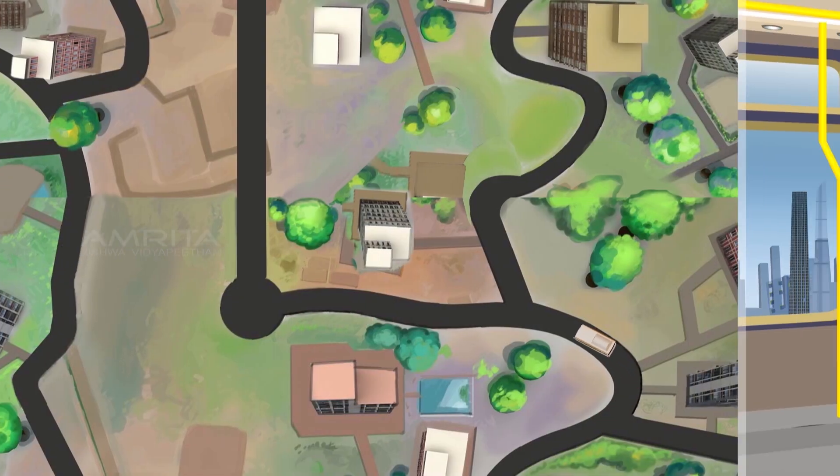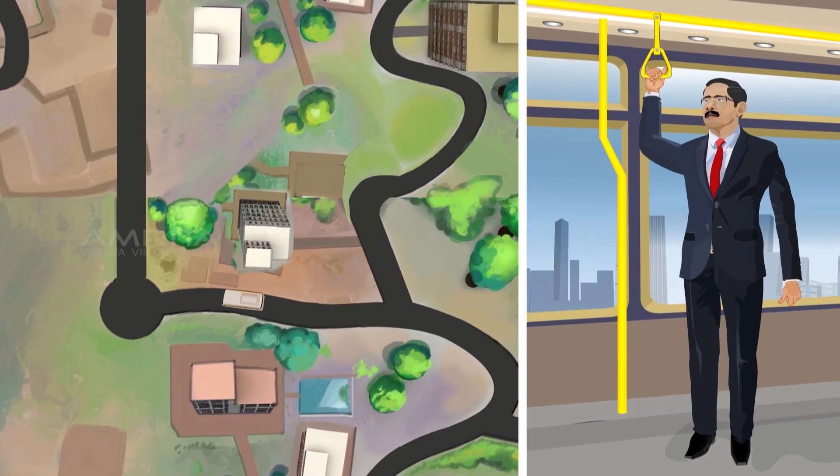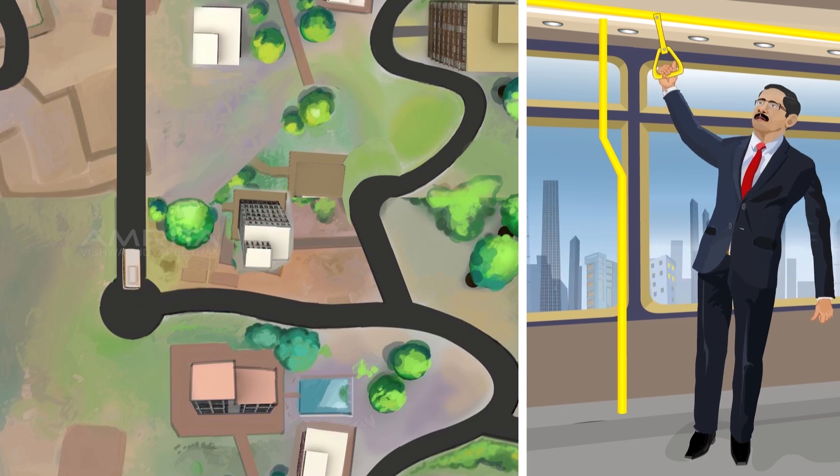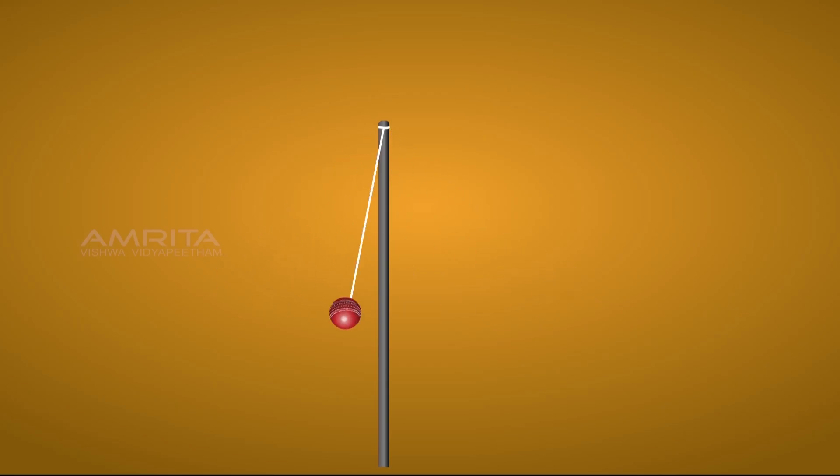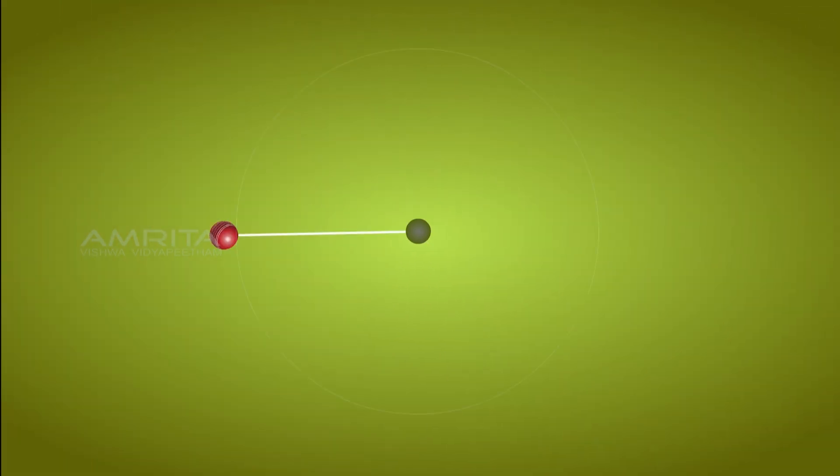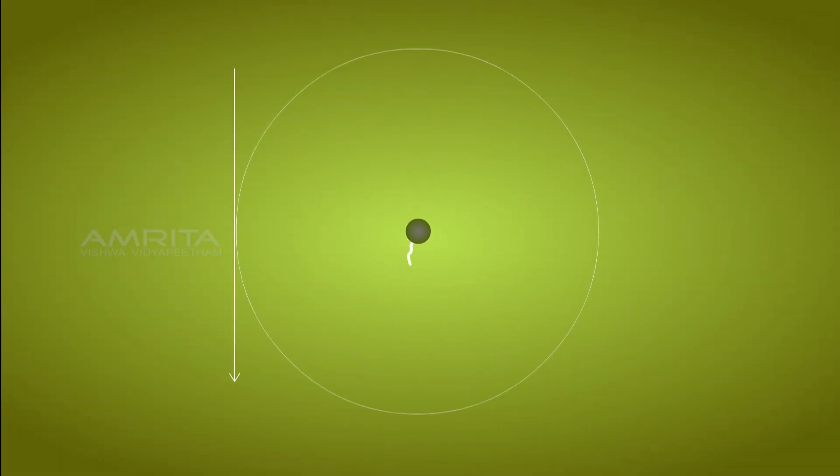What happens when a fast-moving bus negotiates a right-hand curve on the road? The passengers will tilt to the left. Inertia of direction is the tendency of a body to oppose any change in the direction of its motion.